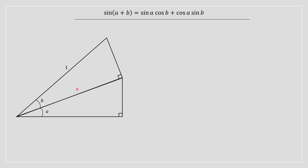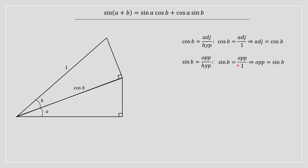Therefore we can find the missing sides of triangle B using SOHCAHTOA. We know that adjacent divided by hypotenuse equals cos B, so with hypotenuse equal to 1, the adjacent side is cos B. Likewise, applying the SOH part, the opposite side is sin B. So we've now labeled all the sides of triangle B.